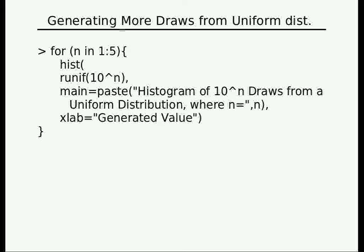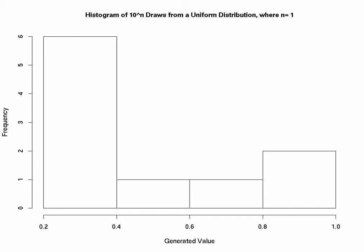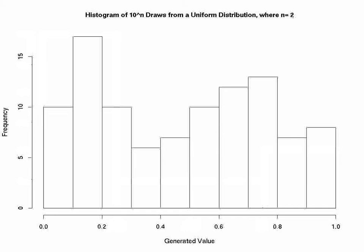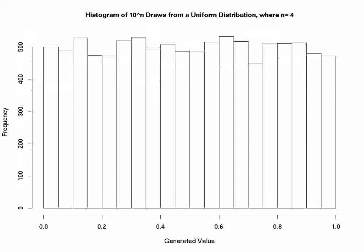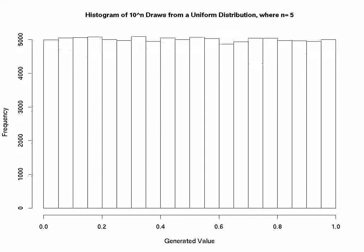Generating more draws from a Uniform Distribution. With the 10 drawn samples, 100, 1,000, 10,000, and 100,000 drawn samples may be displayed via a histogram. It can be seen as the numbers increase one more closely observes Uniformly Distributed Samples.